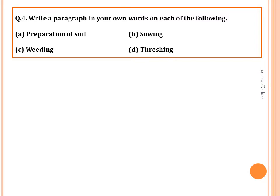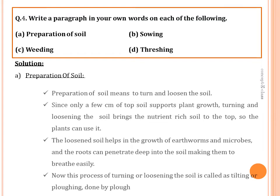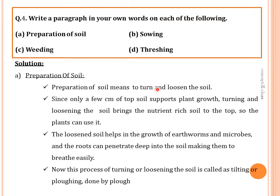Preparation of soil means to turn and loosen the soil. Since only a few centimeters of top soil supports plant growth, turning and loosening brings nutrients to the top so plants can use them. The soil contains water, minerals, and certain dead plants and animals. Organisms in the soil decompose these dead organisms and release nutrients back into the soil.